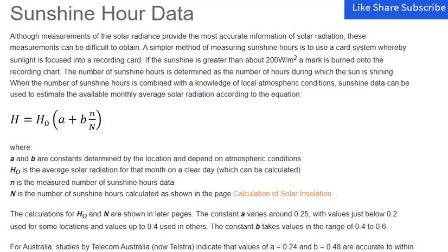Sunshine Hour Data: Although measurements of solar radiance provide the most accurate information of solar radiation, these measurements can be difficult to obtain. A simpler method of measuring sunshine hours is to use a card system whereby sunlight is focused onto a recording card. If the sunshine is greater than about 200 W/m², a mark is burned onto the recording chart. The number of sunshine hours is determined as the number of hours during which the sun is shining.